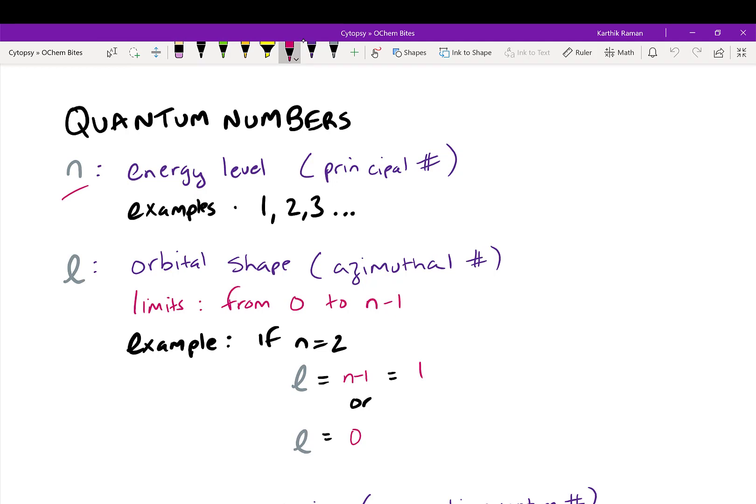This tells you the energy level, essentially how close is it to the nucleus. n can be one, two, three, etc. It can change based on how big the atom is.